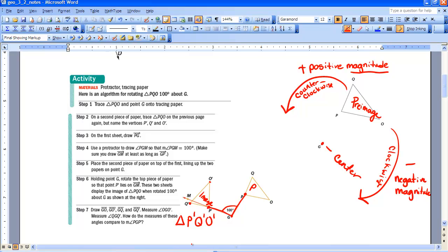So here's an example of a triangle that has been rotated 100 degrees. It's a positive rotation and a counterclockwise direction.